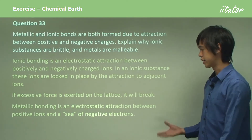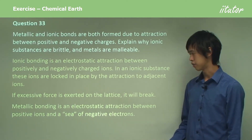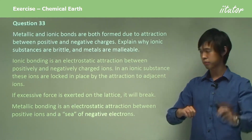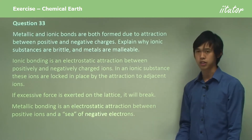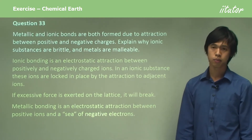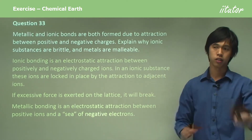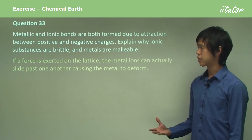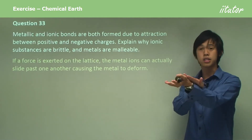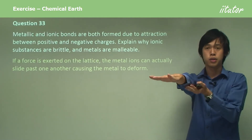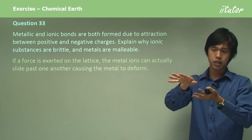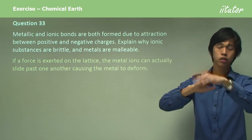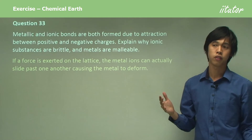Metallic bonding, on the other hand, is an electrostatic attraction between positive ions — the nuclei of the metal — and a sea of negative electrons, the electrons that are whizzing around it. If a force is exerted on the lattice, the metal ions can actually slide past one another because they're happy to just be attracted to these electrons, which are free to move wherever they want.